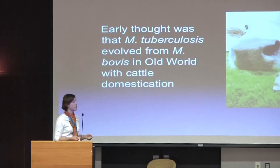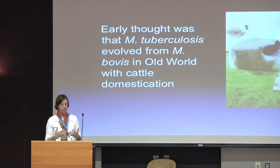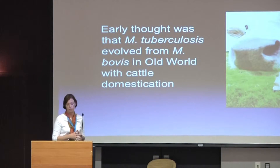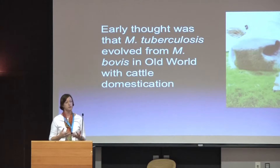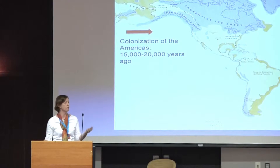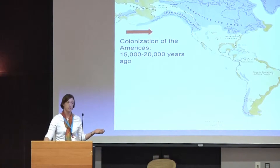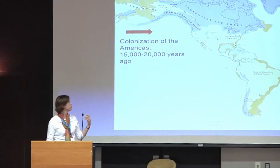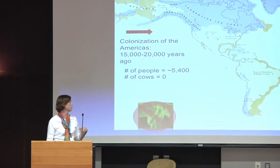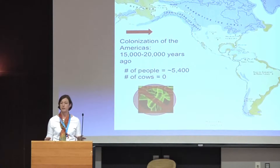So what are the origins of TB? For a long time it's been thought that Mycobacterium tuberculosis evolved from Mycobacterium bovis — so we got it from cows during the process of Old World cattle domestication. We have the first clear historical evidence for TB from China about 2700 B.C., and the first clear skeletal evidence from Italy and Egypt around 4,000 to 4,500 B.C. Now if this is indeed the case, then with the colonization of the Americas about 15,000 to 20,000 years ago, we don't think cows migrated as well, and therefore in the Americas prior to European contact we would not expect to see tuberculosis.